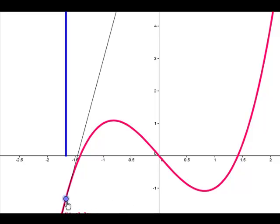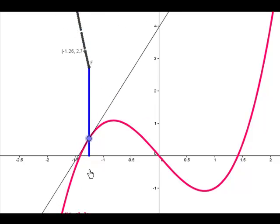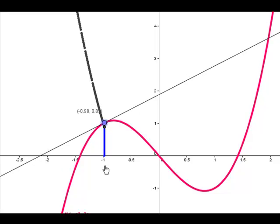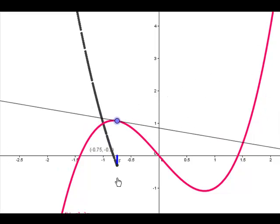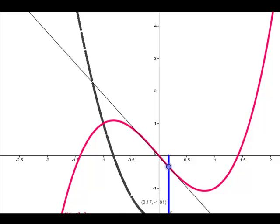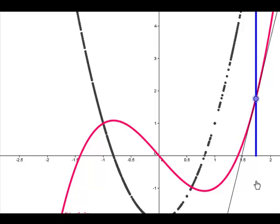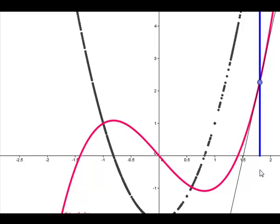So as we drag this, look at what happens to our outputs. So they start decreasing, and we have something tracing those outputs now. Then we go through here, come down and back up, and we get a rough sketch of the graph of our derivative.